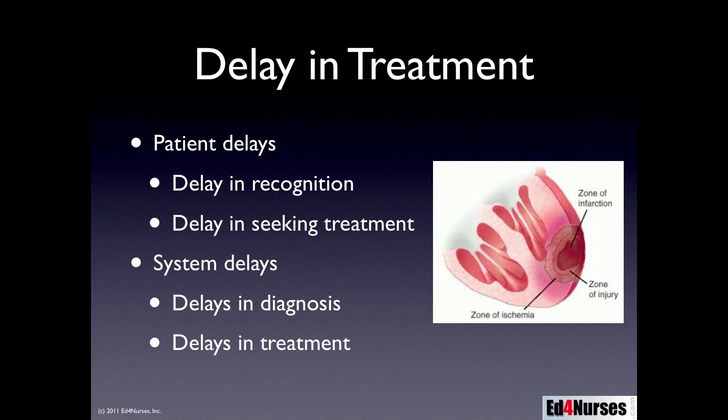There are delays that can occur: patient delays include delay in recognition — the patient sitting at home wondering what the chest pain is — and delay in seeking treatment, such as waiting for someone to take them to the doctor. There are also system delays, including delay in diagnosis — for example, assuming it's just indigestion and having the patient wait — and delay in treatment, where the patient is diagnosed but has no definitive treatment yet.